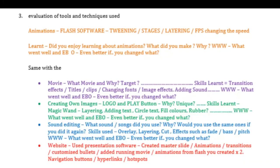What have you done, what skills have you used, what have you learned, what did you enjoy, and what would you do differently? You need to do that for every single product: the animation, the movie, the two separate images, the sound editing, and your website. I've given you some examples below — make sure you write in full sentences. Good luck.